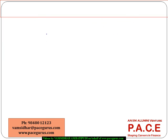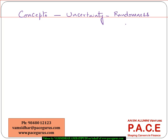To understand a few basic concepts of probability: the word probability comes from uncertainty. Probability is chance. Probability is uncertainty. Probability is randomness in the outcome.